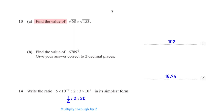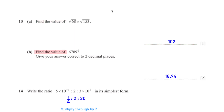Find the value of √68 × √153. When we type this into the calculator we get 102. Find the value of 6789 raised to the power one-third, giving your answer correct to two decimal places. When we type 6789^(1/3) into the calculator we get 18.94 rounded to two decimal places.